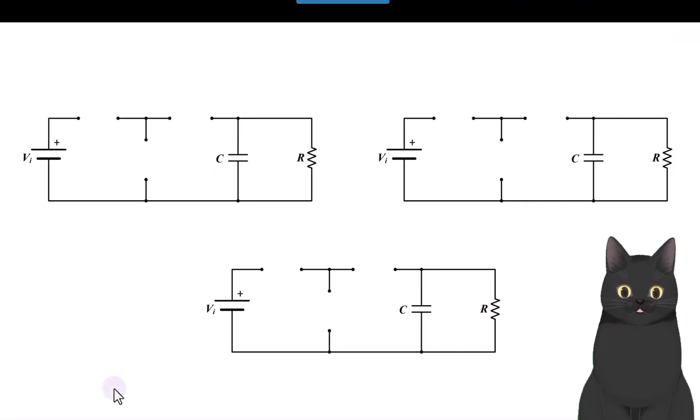So we have three different converters: the buck converter, the boost converter, and the buck boost converter, but how can you remember how they look? What are their topologies?